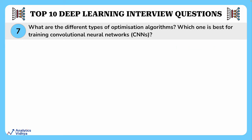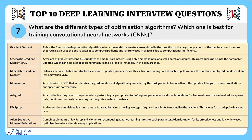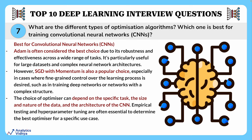The next question looks at various optimization algorithms used in deep learning and which is best for training convolutional neural networks (CNNs). Several optimization algorithms are commonly used: gradient descent (the foundational algorithm), stochastic gradient descent (SGD), mini-batch gradient descent, momentum, Adagrad, RMSprop, and Adam (adaptive moment estimation).